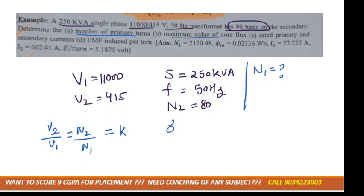Next is maximum value of core flux. You can calculate it as E2 divided by 4.44 times N2 times f times φm.